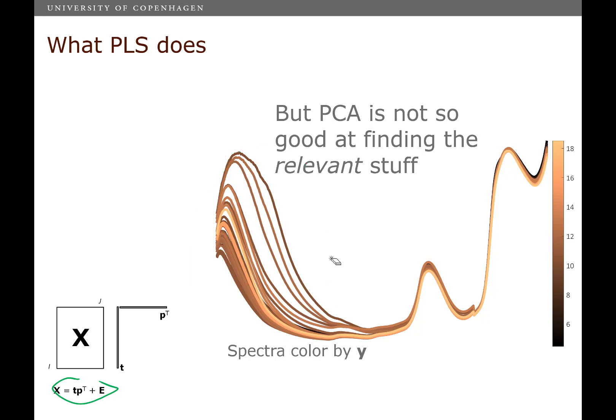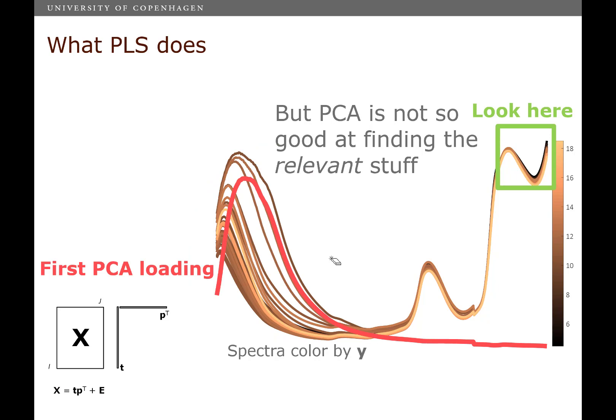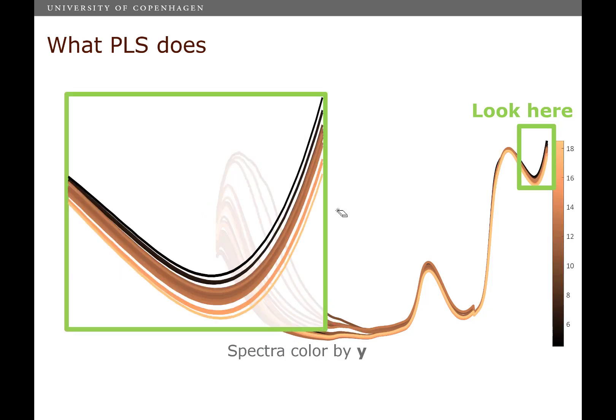So if I do PCA on this data set, then I'm going to find the loading that mainly reflects this area of high variation. But the score that I'm going to get is going to reflect the area there, but that's not going to reflect the Y that I want to predict. And that's a pity.